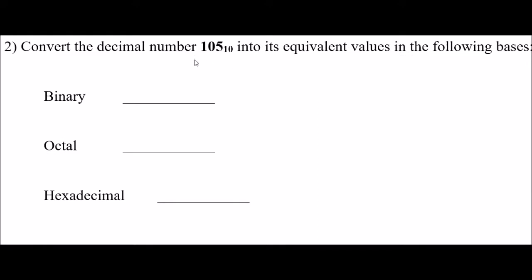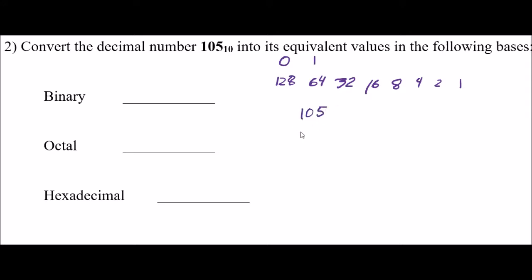In the second example, I'm given a base 10 number and I need to convert it to binary, octal, and hexadecimal. Converting to binary: I write out all the place values — 1, 2, 4, 8, 16, 32, 64, 128 — until I get something bigger than my number. I don't need the 128s place, so I fill in 0. I do need a 64. Then 105 minus 64 is 41. So 32 and 8 is 40, and 1 more. 64 plus 32 plus 8 plus 1 gives me 105.